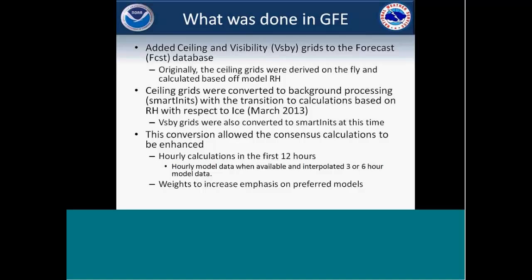Within our Graphical Forecast Editor — the GFE — which we use here at the Weather Service, we added ceiling and visibility grids to our forecast database. The ceiling stuff was calculated off of model RH and derived on the fly, which took a toll on the computers with processing. Back at the beginning of March, we changed it to more of a background processing, which provided a couple of different options: forecasters could look at each individual model to see what ceiling/visibility data is being shown. We also adjusted the calculations from straight RH to RH with respect to ice, and converted over some of the visibility grids at that time too.